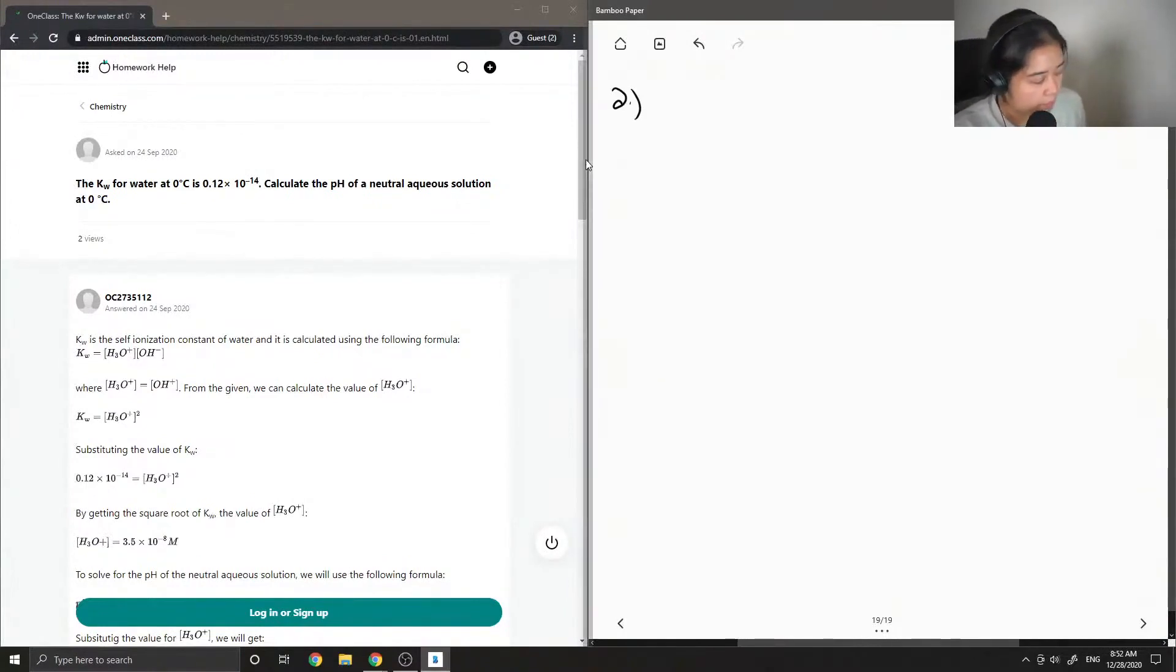Okay, so let's say we had a solution of water and I'll show it associating into its ions into H3O plus plus OH minus.